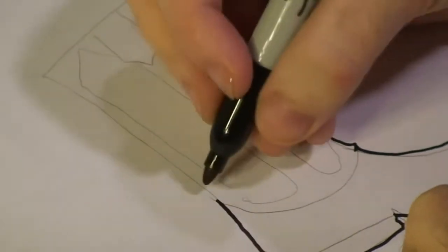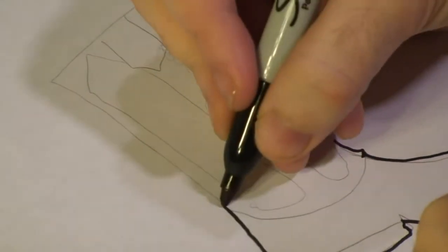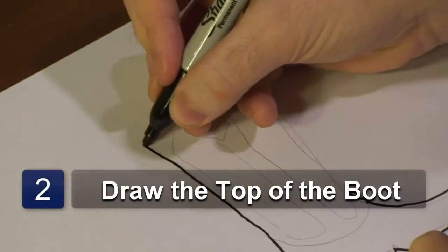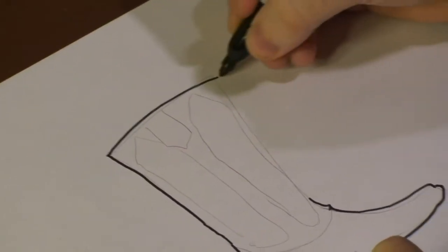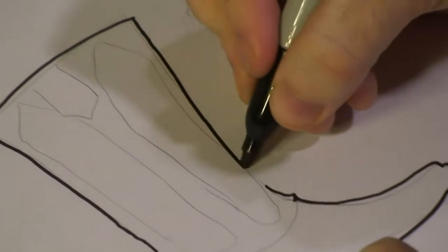Now, whenever you get up to the ankle area, you don't want to stop here. You want to draw a long line up, stop, carry a line over, and then draw a line all the way down.